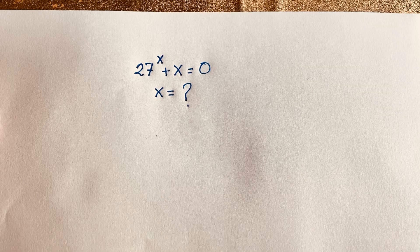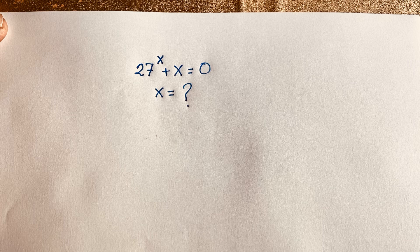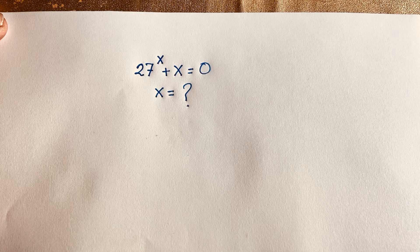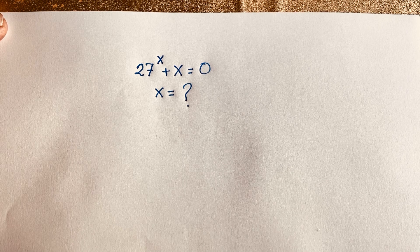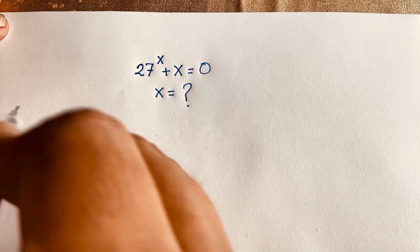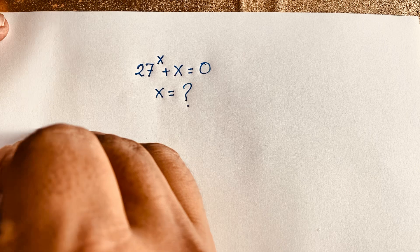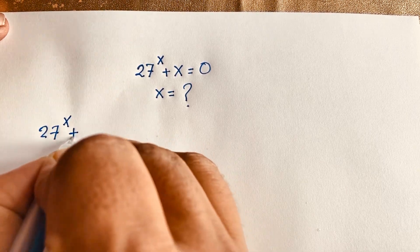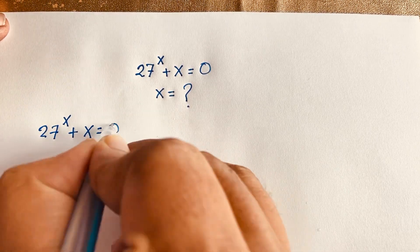Hello everyone, welcome to Russia's Classroom. Today we solve this exponential equation — it is a math olympiad question. Our question is: 27 to the power x plus x is equal to 0. What is x? How to solve this interesting exponential equation? I will solve this question using two methods.